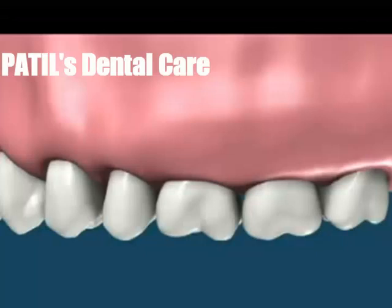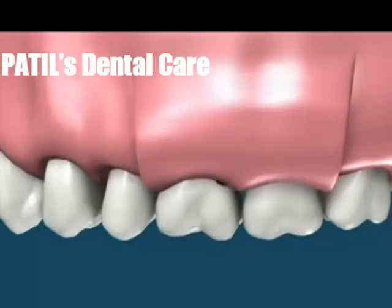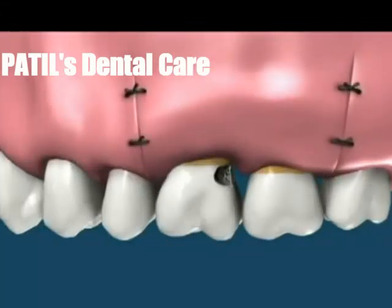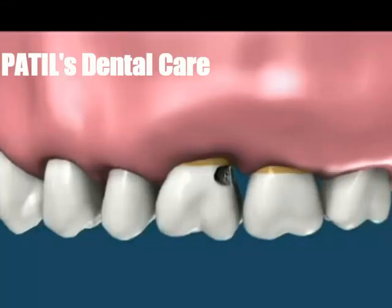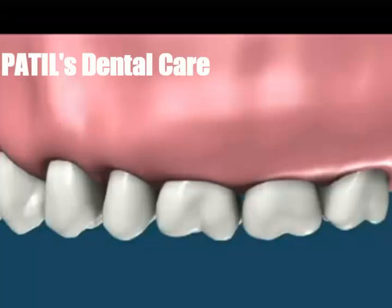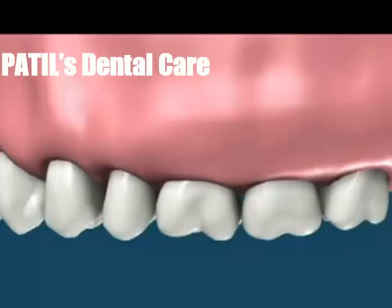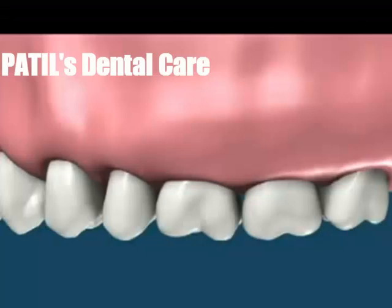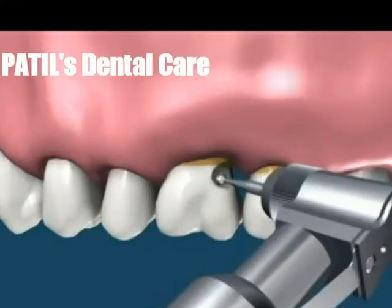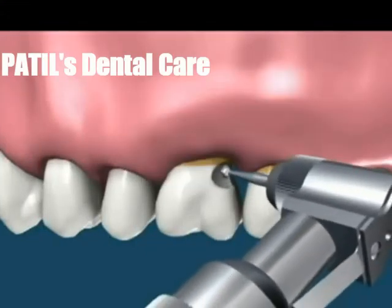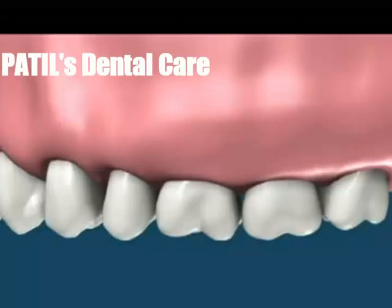The gums are then repositioned on the prepared bone, which now supports the gums below the cavity. The cavity can now be accessed. In this situation a resin filling is used to restore the cavity — it is accessible and removed, followed by the resin placement.